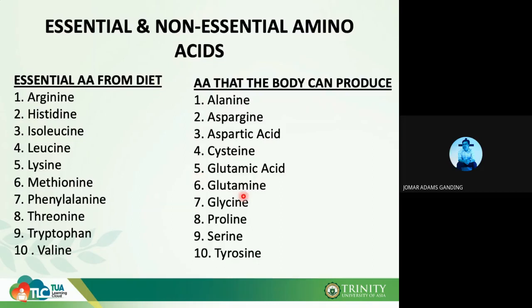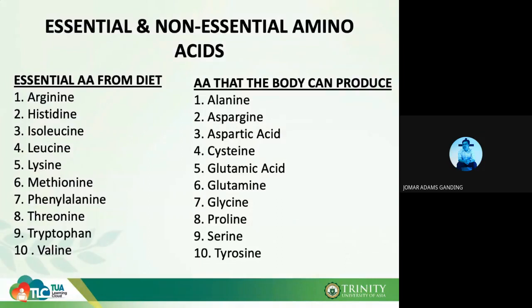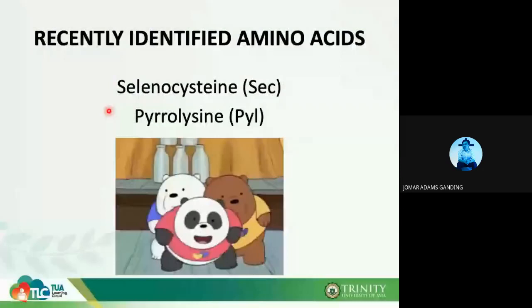I will not be asking you to memorize all 20 amino acids. What you need to remember are the two new amino acids. There are two newly identified amino acids considered new to the original list. These are selenocysteine and pyrrolysine.